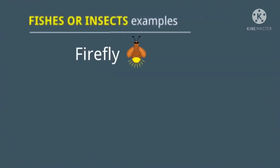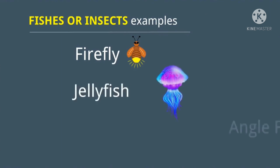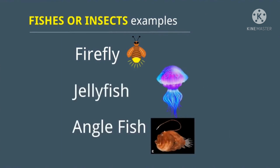Do you know — some fishes and insects can be luminous objects? Like the firefly — we can see it light up. Jellyfish or angelfish — all of these have their own light.